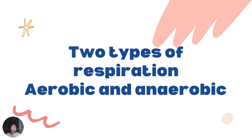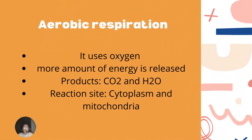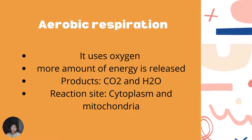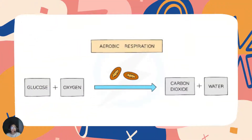Now there are two types of respiration: aerobic and anaerobic respiration, and we'll learn about both of them. Aerobic respiration is defined as the chemical reactions in cells that use oxygen to break down glucose to release energy. More energy is released in aerobic respiration than in anaerobic respiration. The products are carbon dioxide and water — CO2 and H2O — and the reaction site is the cytoplasm and mitochondria. The chemical equation is: glucose plus oxygen gives carbon dioxide plus water plus a large amount of energy, that is 32 ATP.